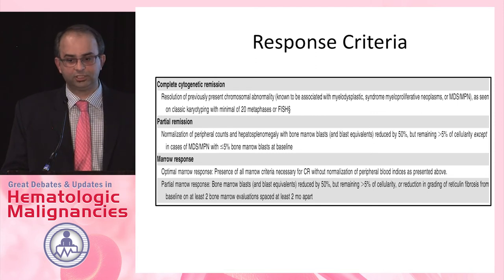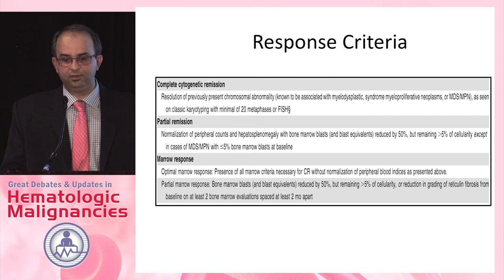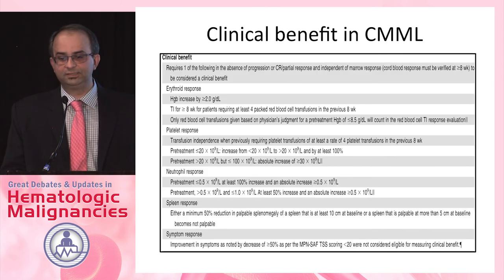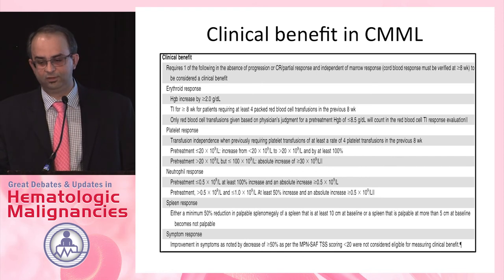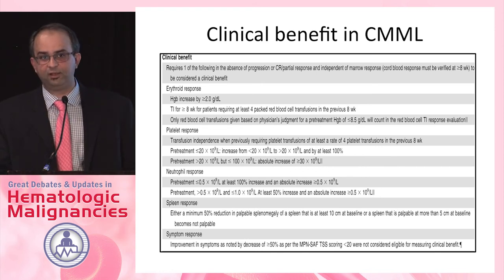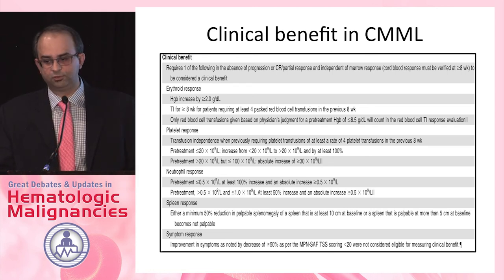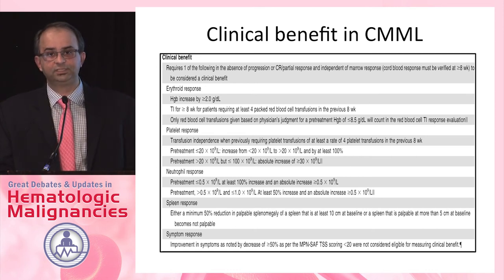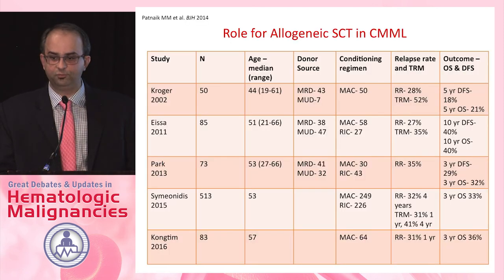Apart from morphological CR, the new response criteria include complete cytogenetic remission, partial response, and marrow response. Most importantly, the section on clinical benefit includes spleen responses — never previously assessed in CMML under MDS criteria — and symptom response. Dr. Ruben Mesa's group has developed the MPN-SAF symptom assessment score, which has been adapted in the field of CMML to try and improve quality of life.